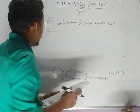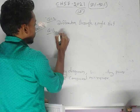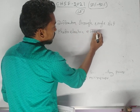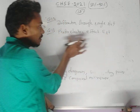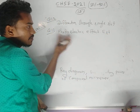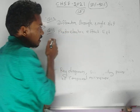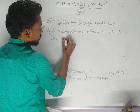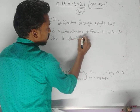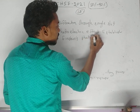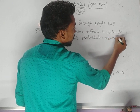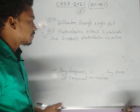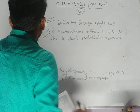Question number thirteen from dual nature of matter and radiation: describe the photoelectric effect and establish Einstein's photoelectric equation.